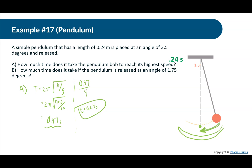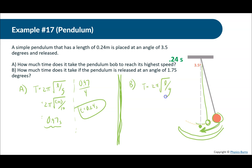Part B: how much time does it take if the pendulum is released at an angle of 1.75 degrees? You might think a shorter distance means less time, but that's your intuition speaking. Looking at T = 2π√(L/g), the angle — or amplitude — has nothing to do with the period. So it doesn't matter whether you release it at 3.5 or 1.75 degrees; it still takes the same time: 0.24 seconds.